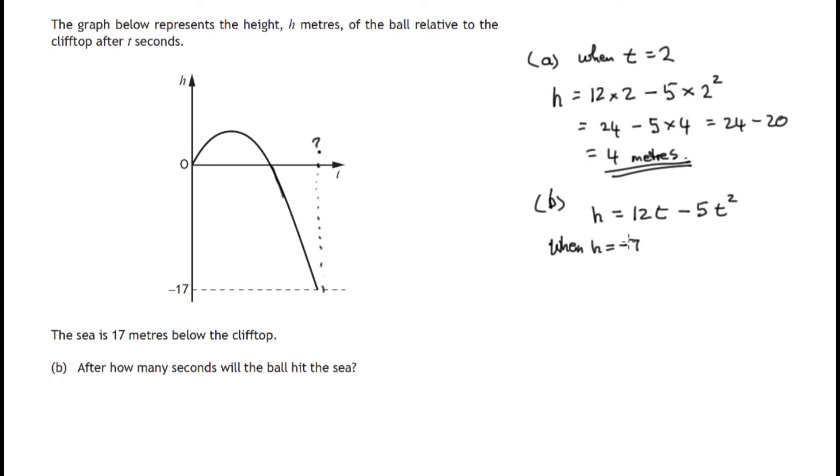We have to find t. So we've got negative 17 is equal to 12t minus 5t squared. Now this is shaping up to a quadratic equation.